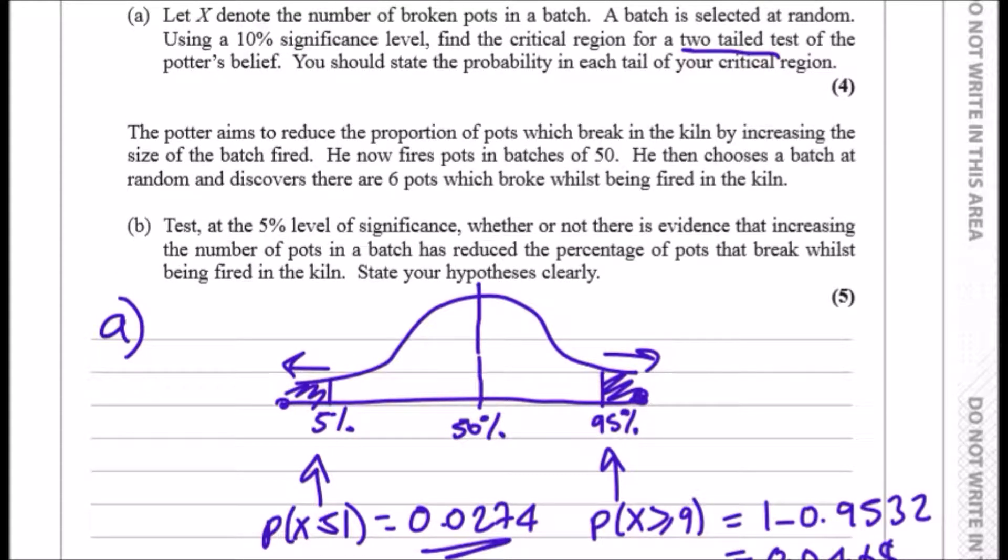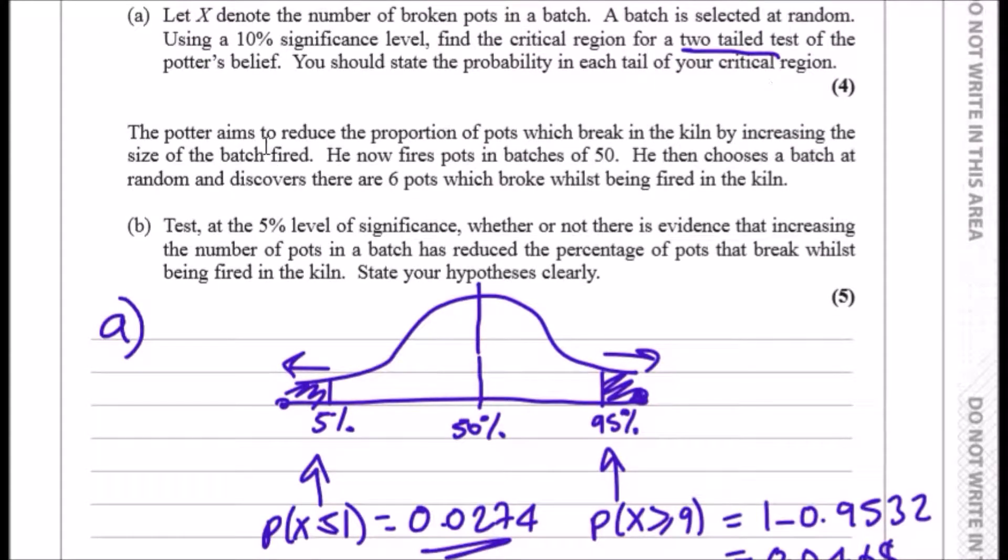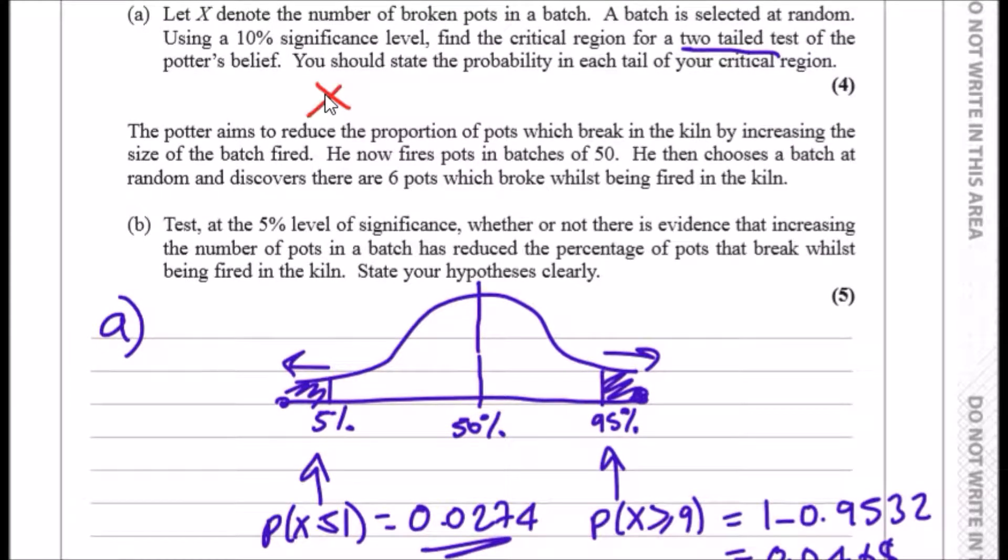Just to make a quick note here, from the previous question we had a binomial distribution of 25 batches with an actual proportion of 20% which he believed would break. So we could instantly say that now the distribution changed to n equals 50 because now there are 50 batches, and the proportion would actually still be 20%.